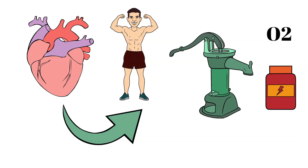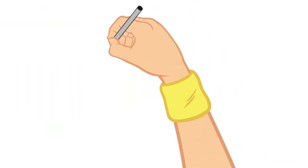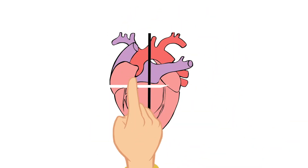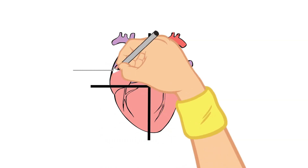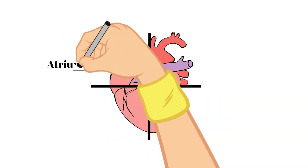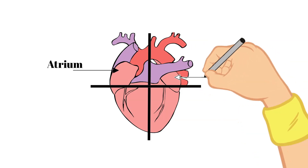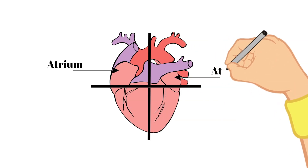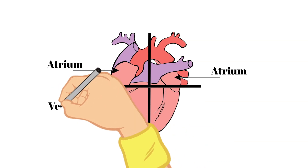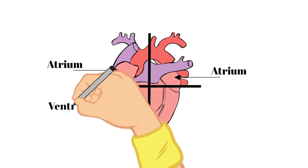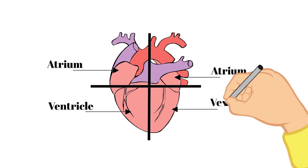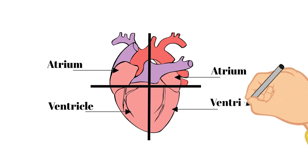Your heart has four chambers — two on the top that are called atria and two on the bottom that are called ventricles. The atria fill with blood returning to the heart from the body and the lungs, and the ventricles pump out the blood to the body and the lungs.